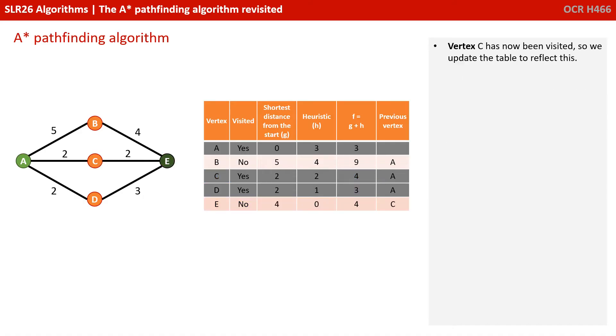Vertex C has now been visited, so we can update the table to reflect this. By continuing the algorithm and considering vertex C, we have found a more optimal route: A, C, E.